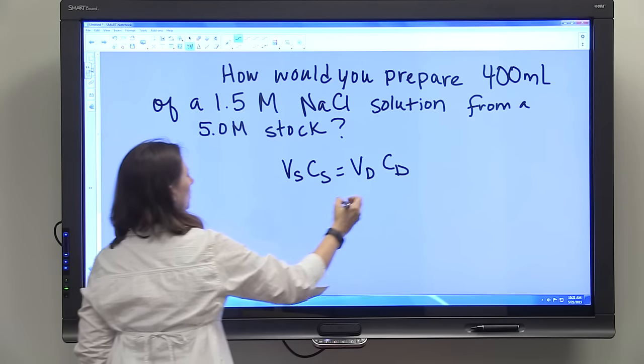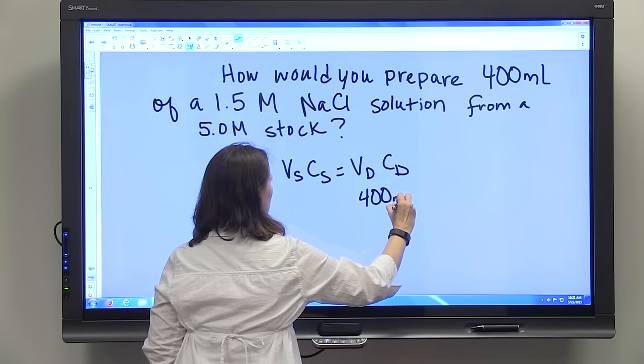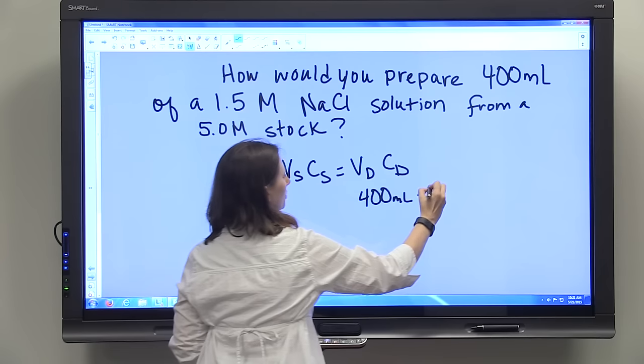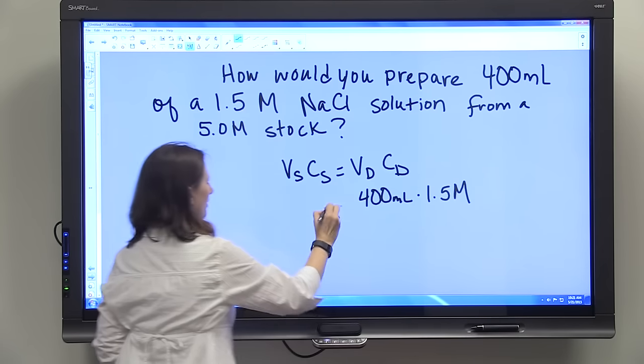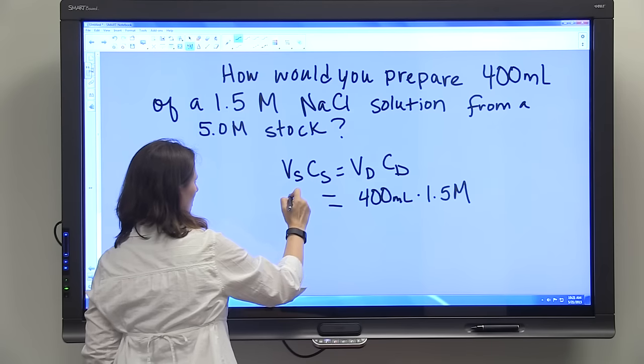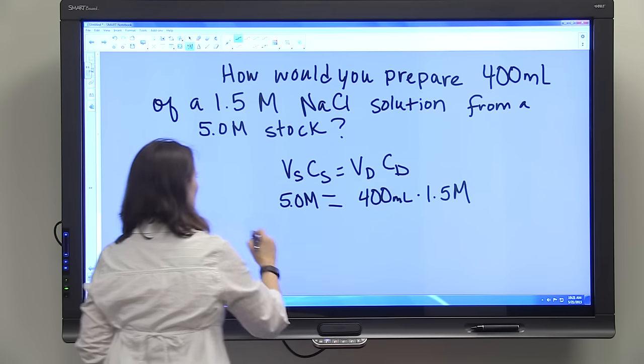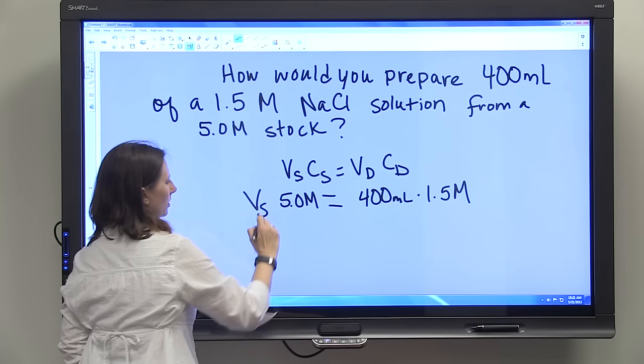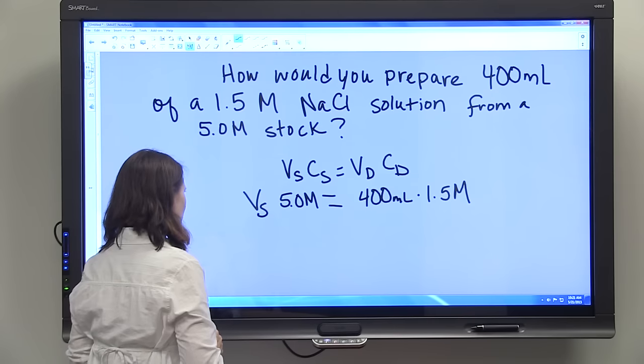What we know: we want 400 mL of a 1.5 molar solution, and we're starting with a 5 molar stock. What we don't know is the volume of stock we need to make this 400 mL solution. We're going to solve for the volume of stock by dividing both sides by 5 molar, not 5 moles.